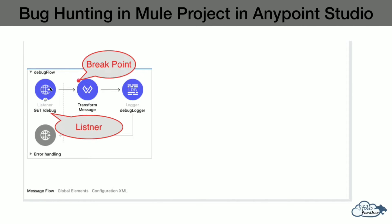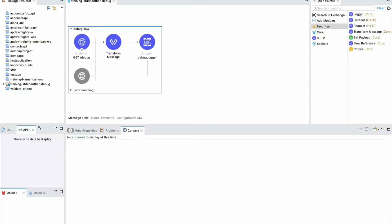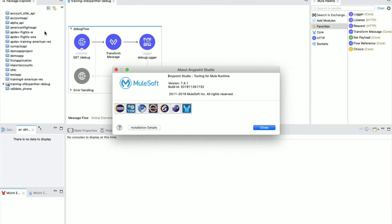Here is a simple flow where we have a listener which is listening on an endpoint called 'debug', and we have a Transform Message — our favorite component for transforming metadata to different outputs like from CSV to XML, DataWeave, Java. We are going to put our breakpoint at this Transform Message, and at the end we have a Logger where we will see what output we are getting.